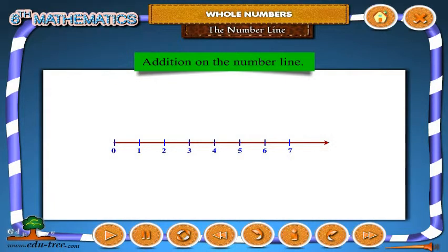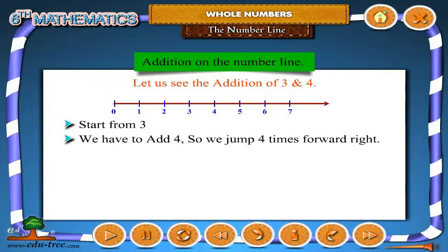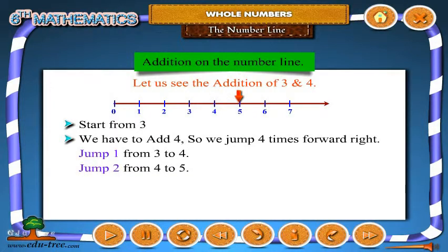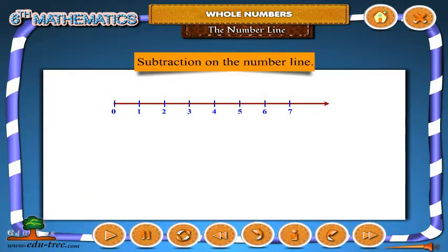Addition on the number line. Let us see the addition of 3 and 4. Start from 3. We have to add 4, so we jump 4 times forward. Jump 1 from 3 to 4, jump 2 from 4 to 5, jump 3 from 5 to 6, jump 4 from 6 to 7. So the sum is 7.